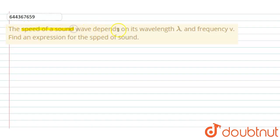So here's the question: the speed of sound wave depends on its wavelength lambda and frequency. This is not v, this is mu, okay? This is mu, not v. Find an expression for the speed of sound.